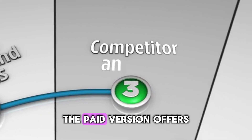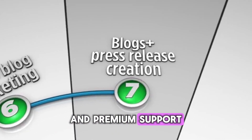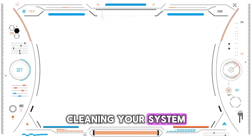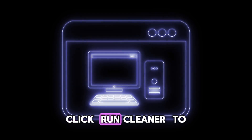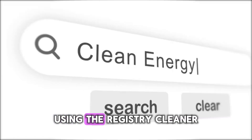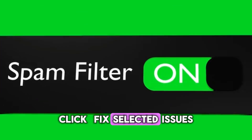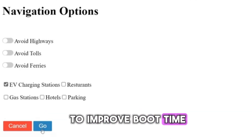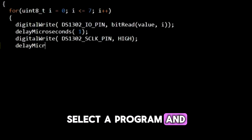The Pro version offers additional features like real-time monitoring, automatic updates, and premium support. Setup is similar but requires a license key. For basic usage — cleaning your system: open CCleaner, click Analyze to scan for junk files, review the results, then click Run Cleaner to remove the files. Using the Registry Cleaner: go to the Registry tab, click Scan for Issues, review found issues, then click Fix Selected Issues. Managing Startup Programs: go to Tools > Startup and disable unnecessary startup programs to improve boot time. Uninstalling Software: go to Tools > Uninstall, select a program, and click Uninstall.